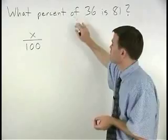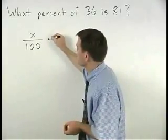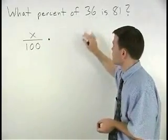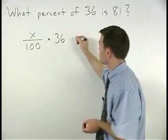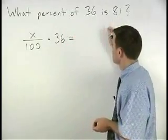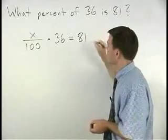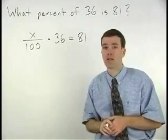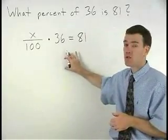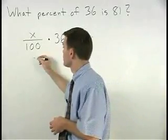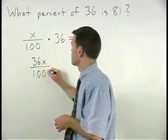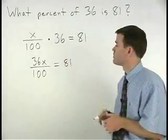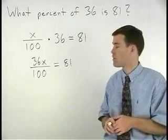Of means times, 36 is 36, is means equals, and 81 is 81. We can rewrite this problem as 36x over 100 equals 81.